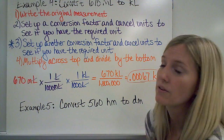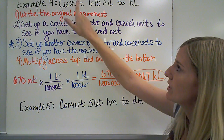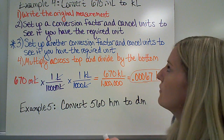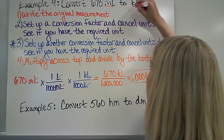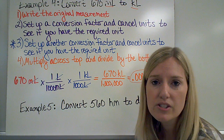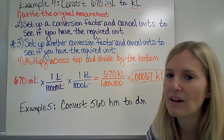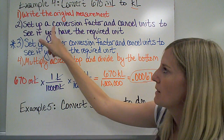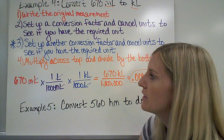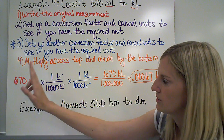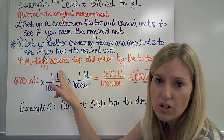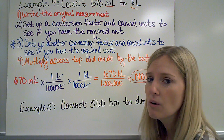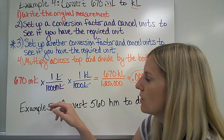Here's a more difficult example: I'm going to convert 670 milliliters to kiloliters. Notice that I'm going from a prefix to another prefix — this is what makes it more difficult. The steps are still the same, but there's just an extra step. First, I rewrite the original measurement. Then I set up my conversion factor: milliliters goes on the bottom, liters goes on the top. It's difficult to remember how many milliliters are in a kiloliter, but you probably know how many milliliters are in one liter — so that's our first conversion factor.